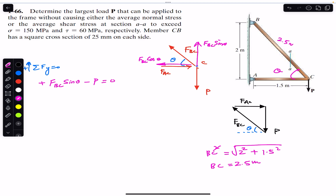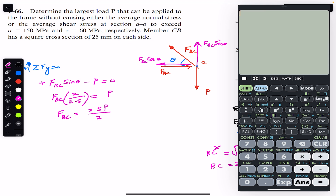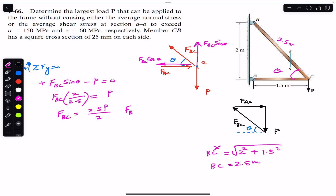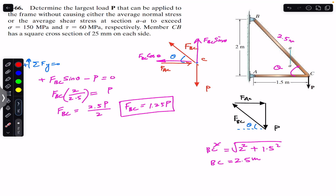BC is 2.5 meters. Since sin(θ) equals perpendicular divided by hypotenuse, and taking P to the other side, we get FBC = (2.5/2)·P = 1.25P. This is the relationship between FBC and force P. Now to find the largest load for both conditions, we pass a cutting section through the BC member, which has a square cross section of 25 × 25 mm.